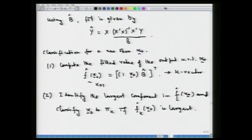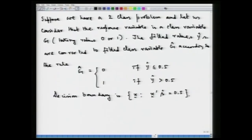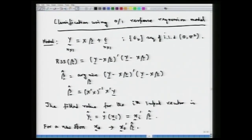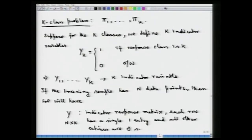This section has shown how simple the classification rule based on a 0-1 response regression model is, both for the 2-class problem and the k-class generalization. We will stop at this point. In the next lecture, we are going to look at nearest neighbor classifiers and the logistic discrimination rule.